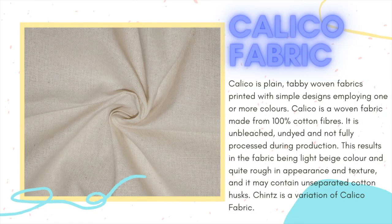Calico fabric. Calico is a plain, tabby-woven fabric printed with simple designs employing one or more colors. Calico is a woven fabric made from 100% cotton fibers. It is unbleached, undyed, and not fully processed during production. This results in the fabric being a light beige color and quite rough in appearance and texture, and it may contain unseparated cotton husks. Chintz is a variation of calico fabric.